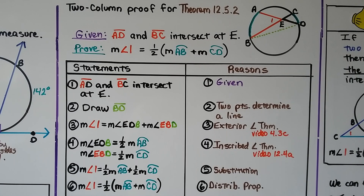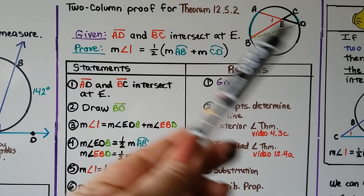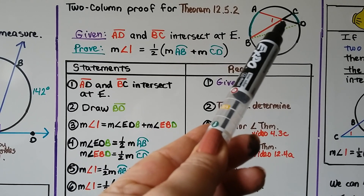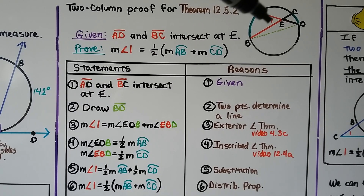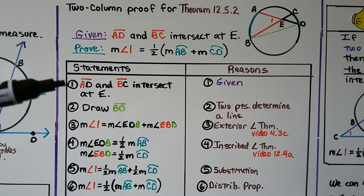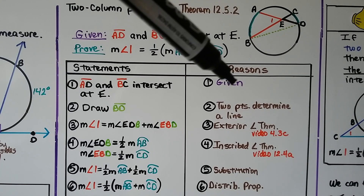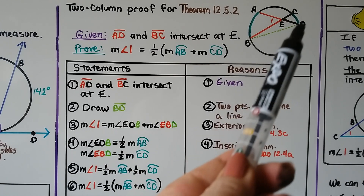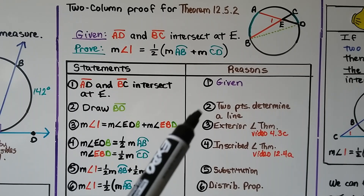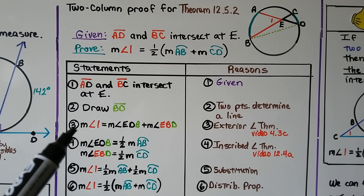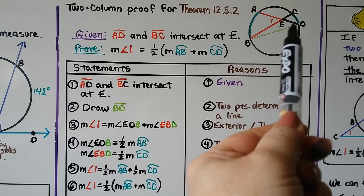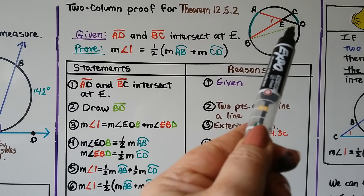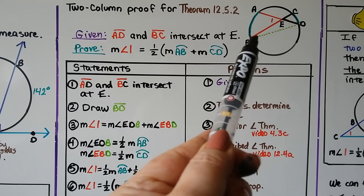Here's a two-column proof for theorem 12.5.2. It's given that chord AD and chord BC intersect at E, and we want to prove that the measure of angle one equals half times the measure of arc AB plus the measure of arc CD. Statement one: AD and BC intersect at E — given. Statement two: draw BD — two points determine a line. Statement three: the measure of angle one equals the measure of angle EDB plus the measure of angle EBD, by the exterior angle theorem.